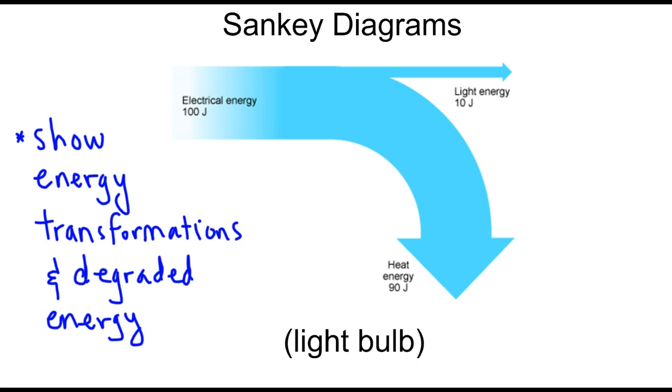Let's take a look at this Sankey diagram for a light bulb, which is simplified, by the way. The values are not quite like this. The light bulb uses up electrical energy. Maybe it's a 50 watt bulb, and if you run it for 2 seconds, it'll have used up 100 joules of electrical energy from the wall, from the outlet. So 100 joules goes into the bulb, and only 10 makes it out as useful output.